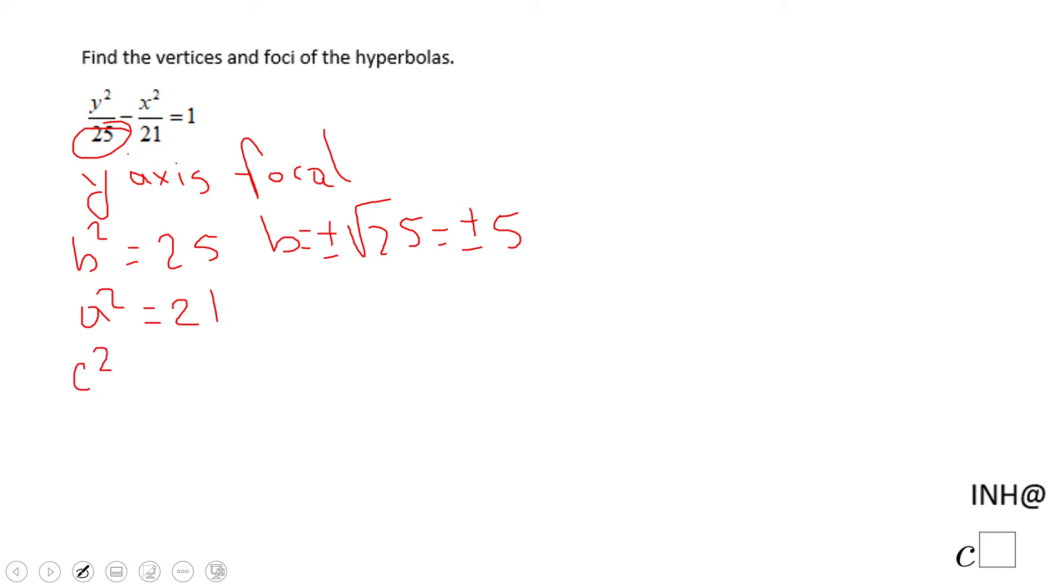In this case, c² equals 25 plus 21, which equals 46. So c is plus or minus the square root of 46, which cannot be simplified.